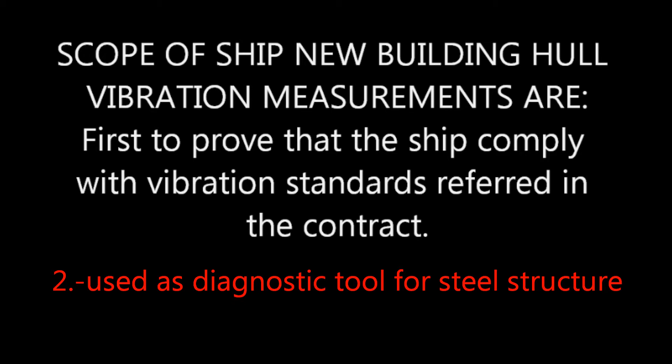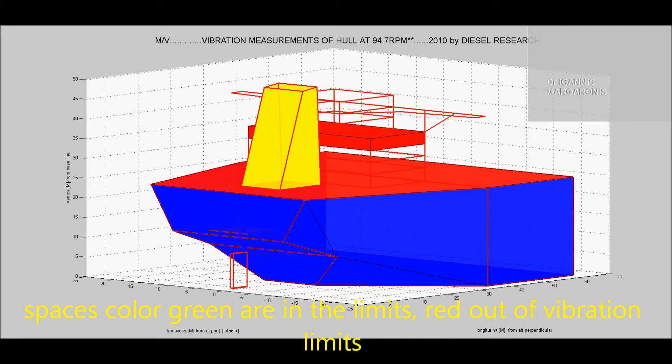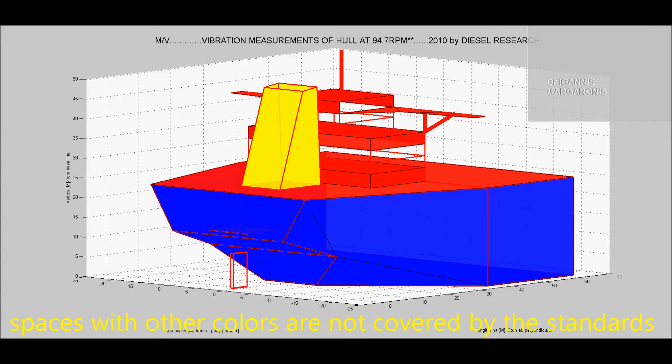We present in color scale all the spaces and areas above the limits, easily noted by non-vibration specialists as managers, captains, lawyers, and arbitrators. By red color note the spaces over the limit, and by green for spaces within the limits. By other colors noted spaces not covered by the building contract referred standards.